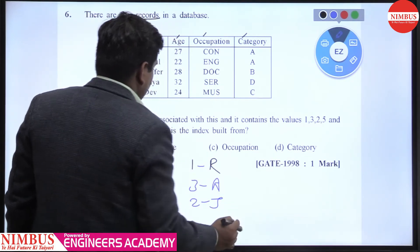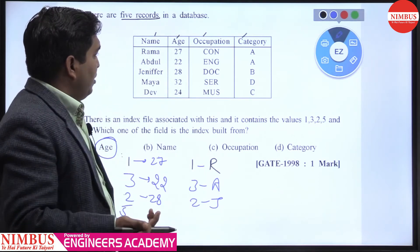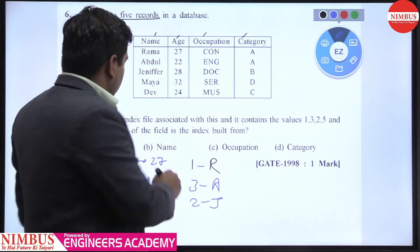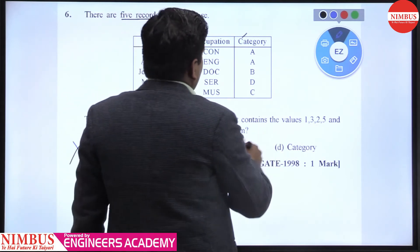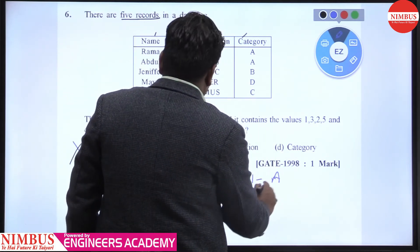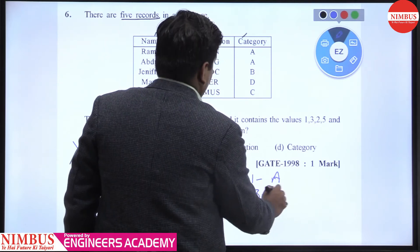That is also not making such a valid combination, that's why we don't take it. Now we are talking about the category. One is given for A and three is also given for A. No, this is not allowed.